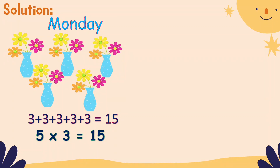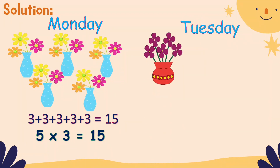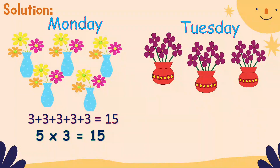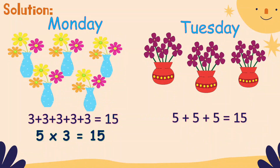On Tuesday, she used three vases and put five flowers in each. Our addition sentence is five plus five plus five equals 15. And our multiplication sentence is three times five equals 15.